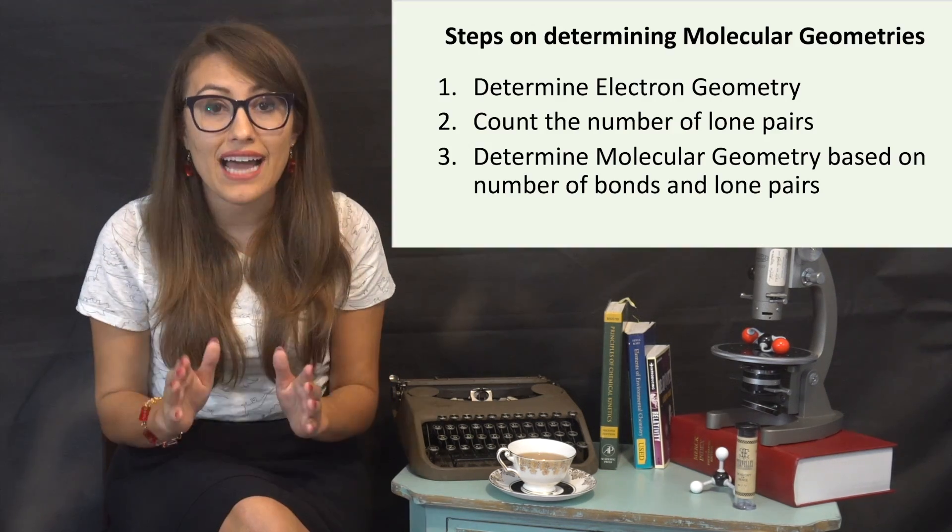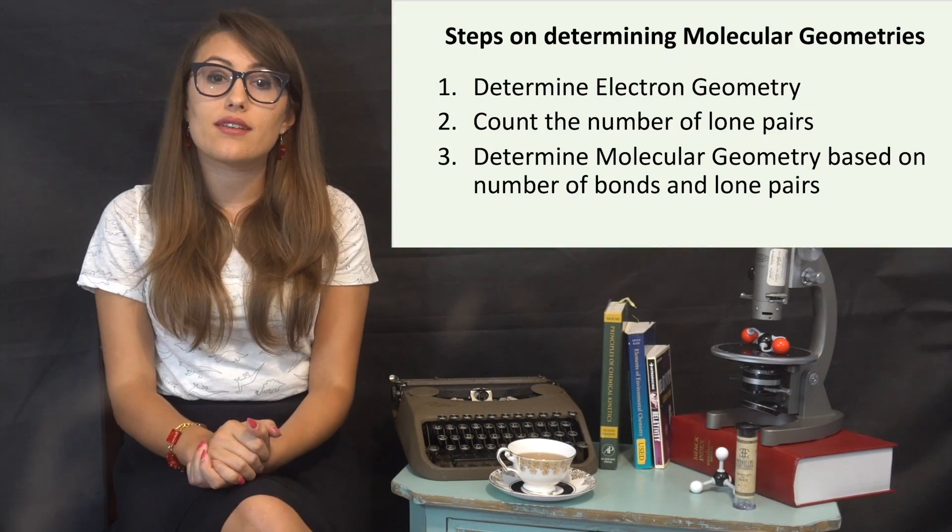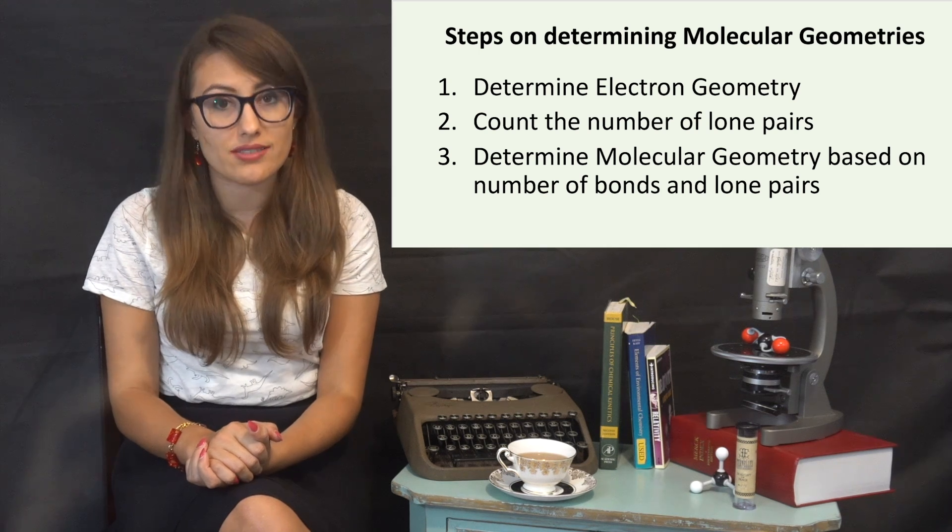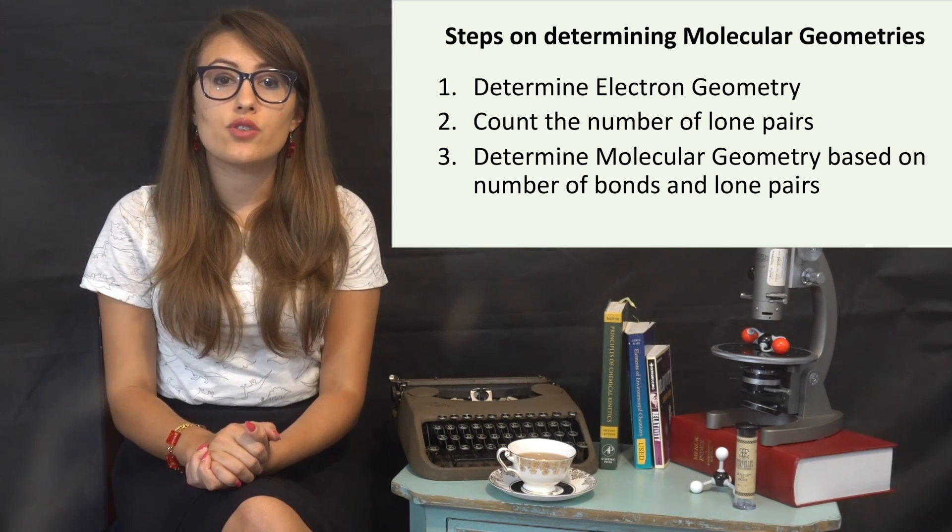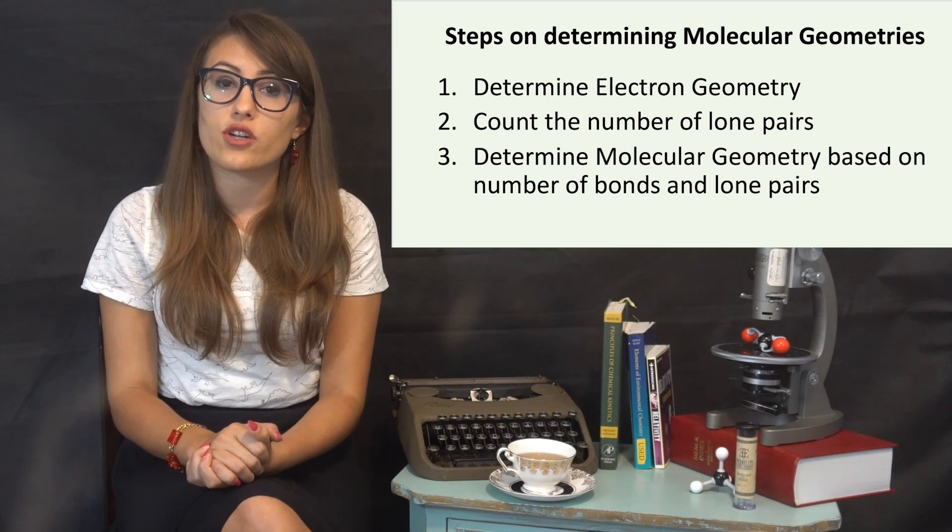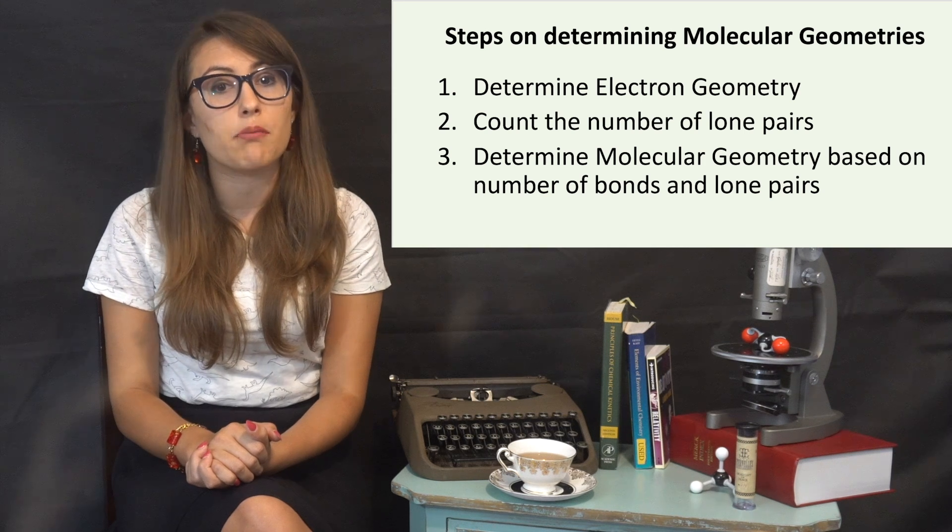It is important to keep in mind that replacing bonds with lone pairs changes molecular geometry, but not electron geometry, because the number of electron groups is still the same. Because of this, you will also need to determine electron geometry before you can determine molecular geometry.